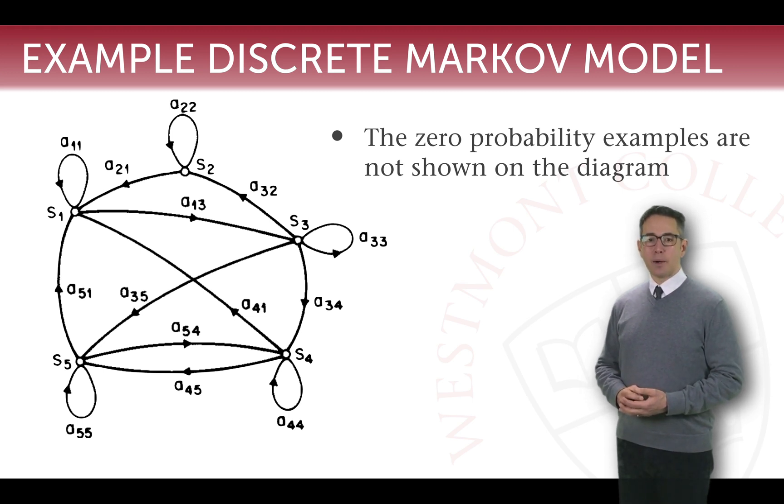Similarly, if we look at the probabilities for state S4, from S4 we have three options. We can go to S1, we can go to S5, or we can go to S4, stay in the same state. We cannot go to S2 or to S3. There's no arrow out of S4 going to those states. So we know that the transition probability from 4 to 2 and 4 to 3 is 0.